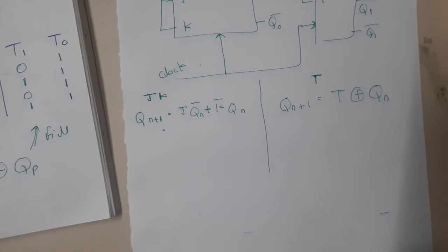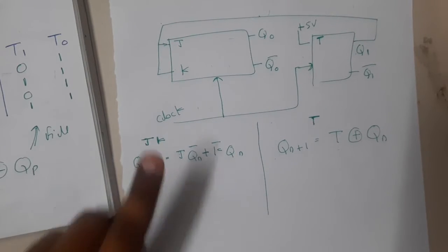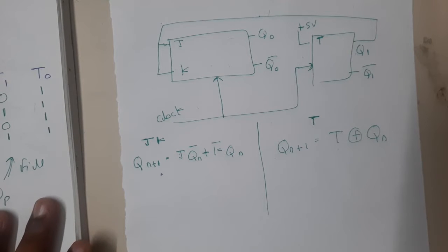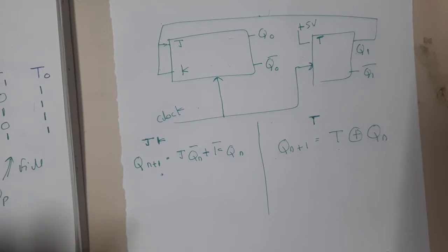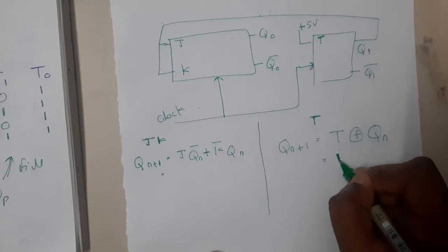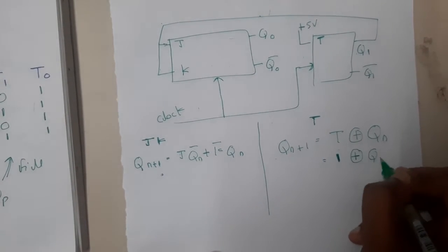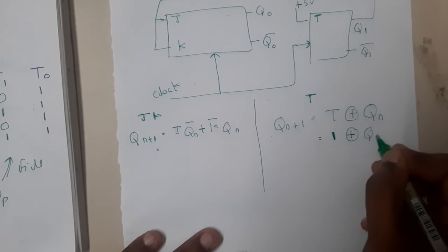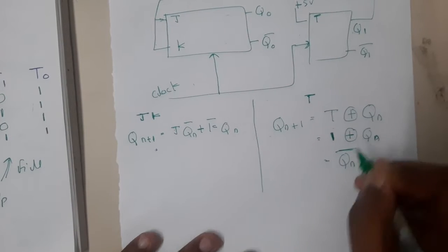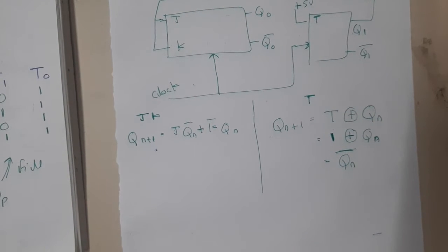Now observe the diagram carefully. T is connected to positive 5 volts, which means T = 1. So the T flip-flop equation becomes 1 ⊕ Qn, which is simply Q̄n. That's quite easy.